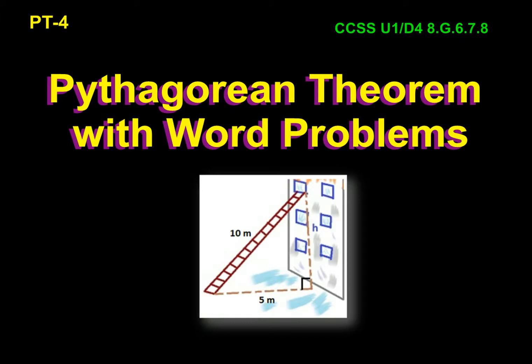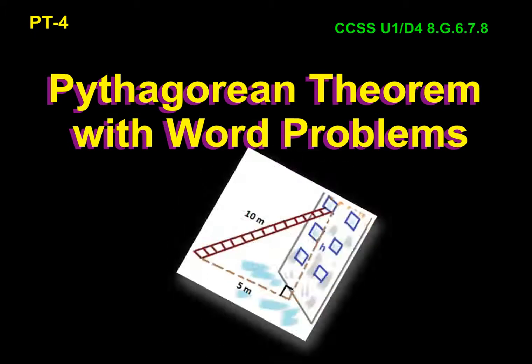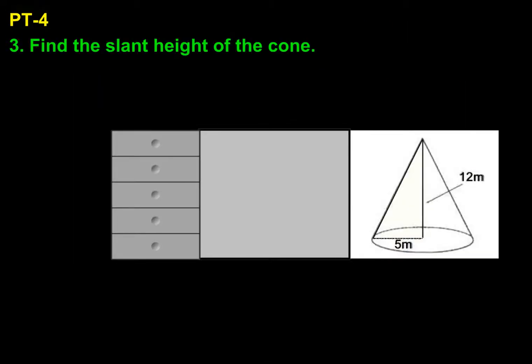Welcome to the 8th grade Math Homework Helper Series. Tonight's homework is PT4, Pythagorean Theorem with Word Problems. We're going to start by taking a look at number 3, find the slant height of the cone.